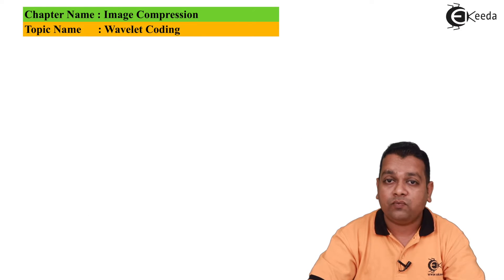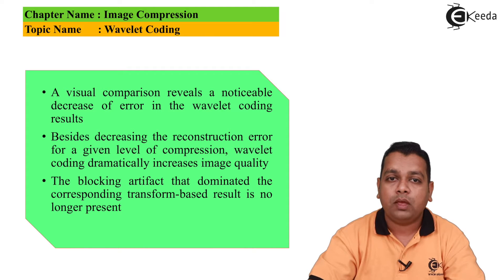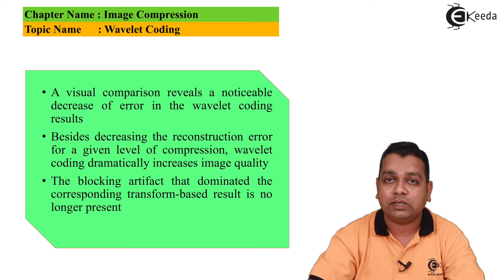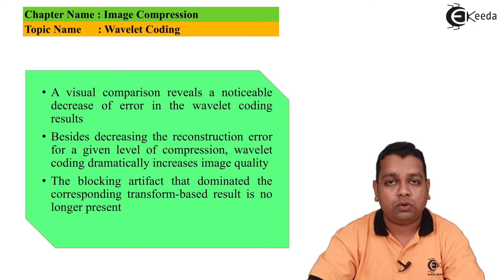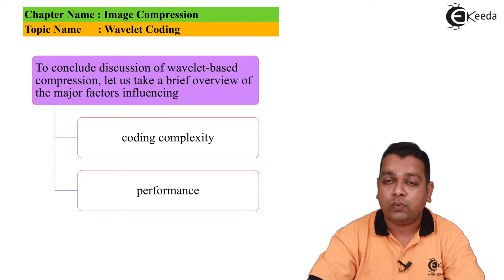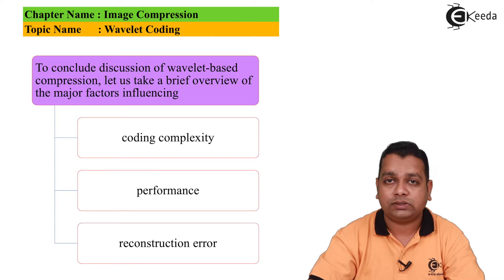A visual comparison reveals a noticeable decrease in error in the Wavelet coding result. Besides decreasing the reconstruction error for a given level of compression, Wavelet coding dramatically increases the image quality. The blocking artifact that dominated the corresponding transform-based result is no longer present. To conclude the discussion of Wavelet-based compression, let us take a brief overview of the major factors that influence coding complexity, performance, and reconstruction error.